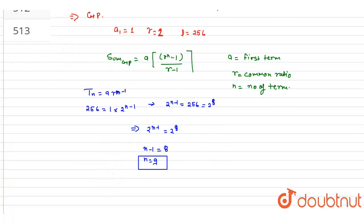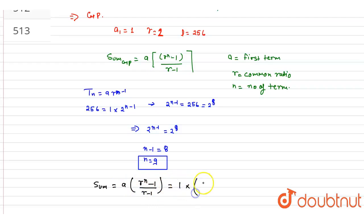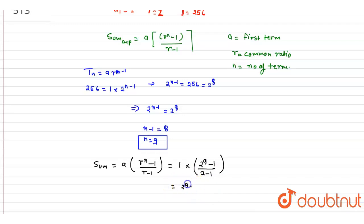Now we can find the sum. Sum is equal to a into r power n minus 1 upon r minus 1. So we have first term 1, into 2 power 9 minus 1, upon 2 minus 1. By simplifying, we get 2 power 9 minus 1. Now 2 power 9 is 512 minus 1, which gives 511.